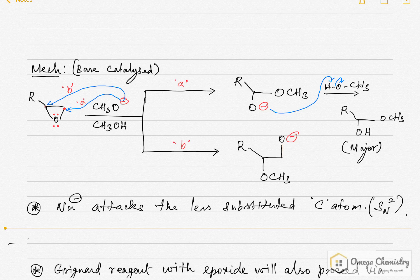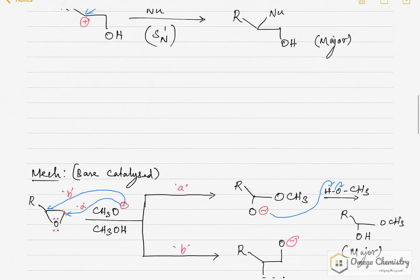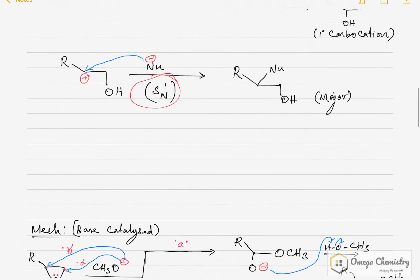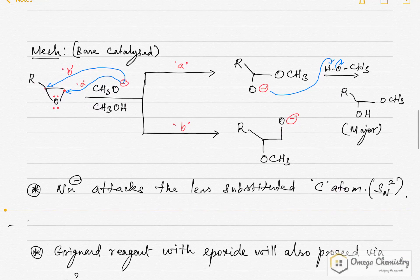So, we can conclude that in acid catalyzed reactions, the nucleophile attacks at the more hindered position, and it follows SN1 type of reaction. Whereas in base catalyzed reactions, the nucleophile attacks at the less hindered carbon.